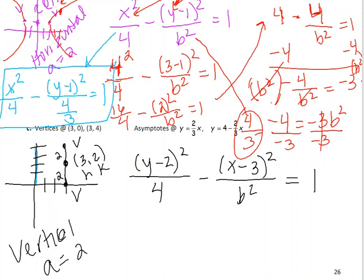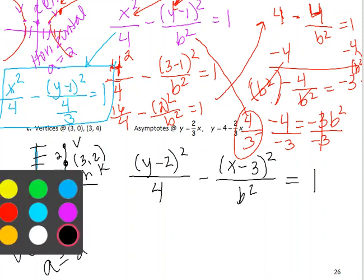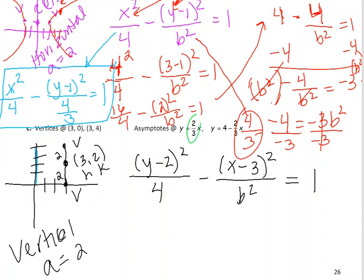So, b squared is what I need to figure out. And so, the other thing that they give me is the asymptotes. And the only part of the asymptote that you really even need is the slope. So, since the slope is 2 over 3, if you remember, in a vertical hyperbola, it is a over b. So, since a was 2 from the vertices, we already knew that. That means that this is the correct version, not a reduced version. b is 3.